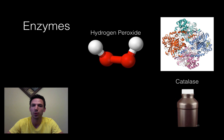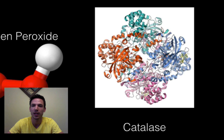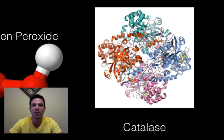One enzyme that we worked with in the lab is an enzyme called catalase. Catalase, as seen here, is a macromolecule of protein made up of a chain of amino acids. Catalase is specifically an enzyme that speeds up the breakdown of hydrogen peroxide.